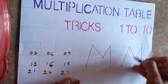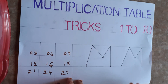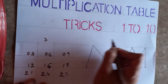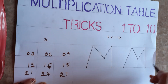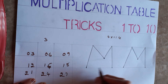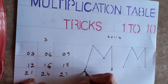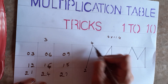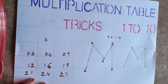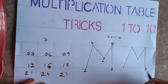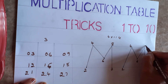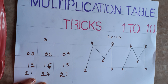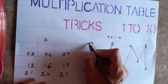For the fourth table, draw two M shapes. Then write the even numbers: start with zero, two, four, six, and eight on one side — same way write zero, two, four, six, and eight on the other side as well.